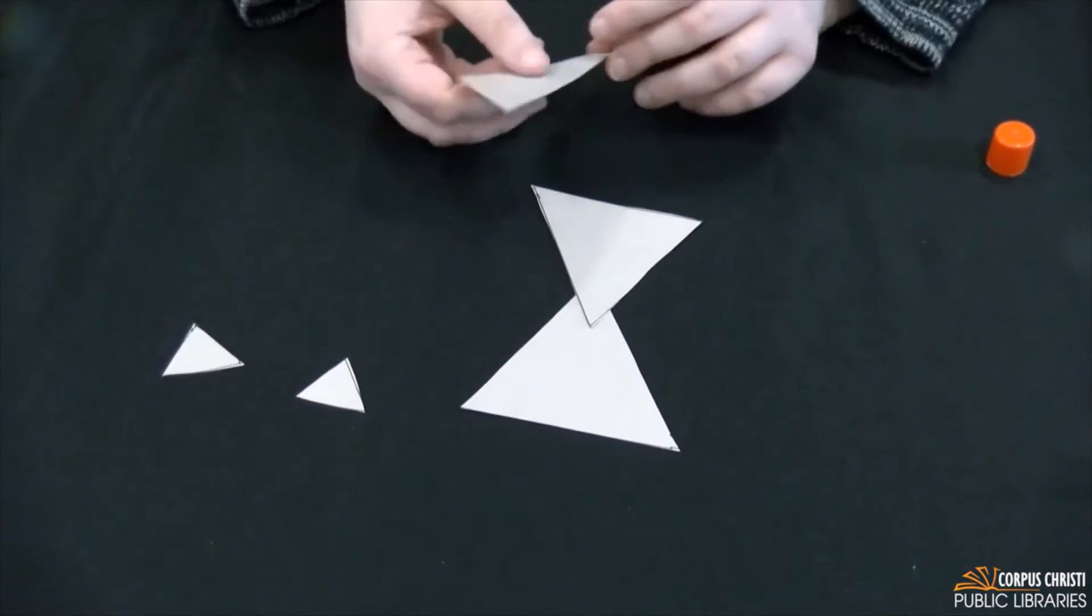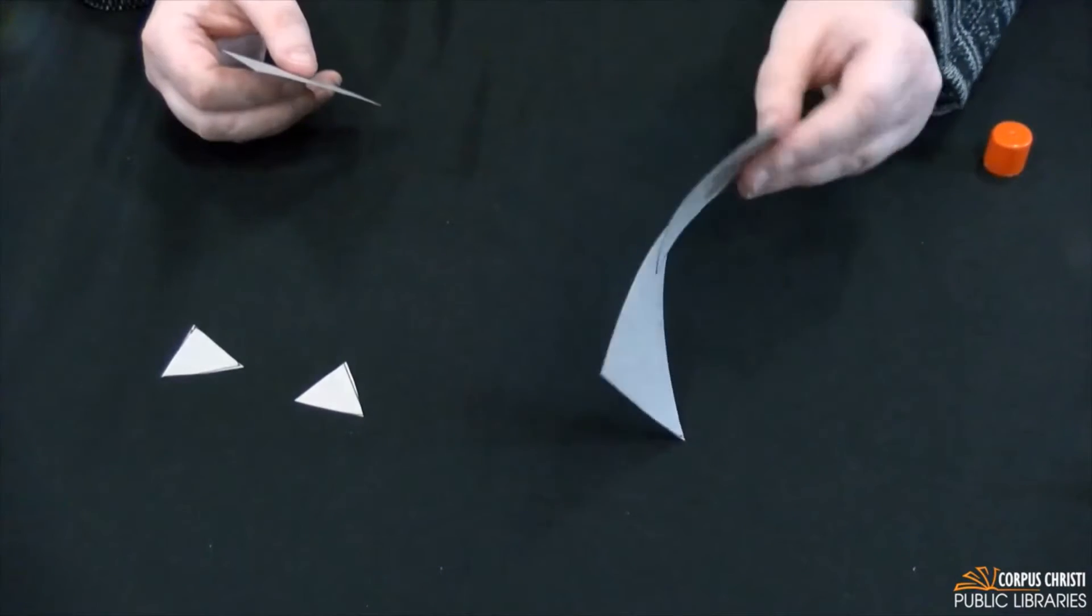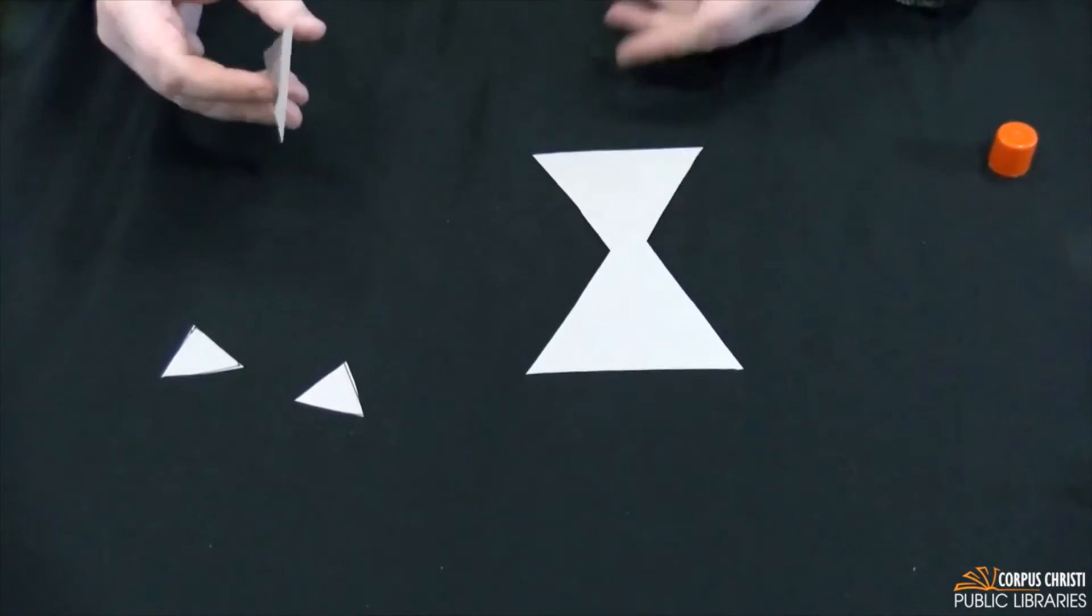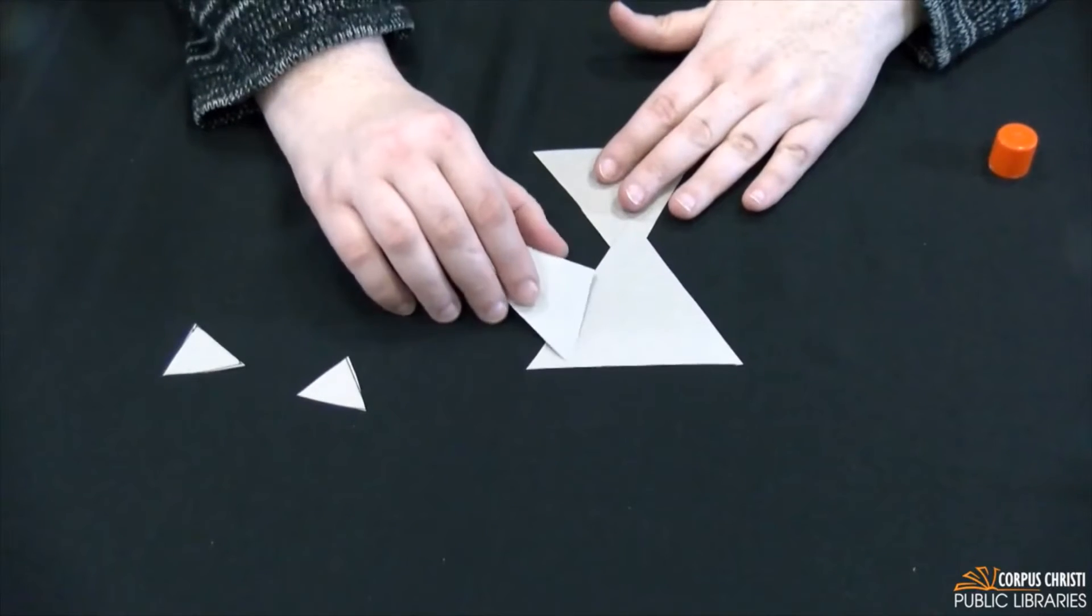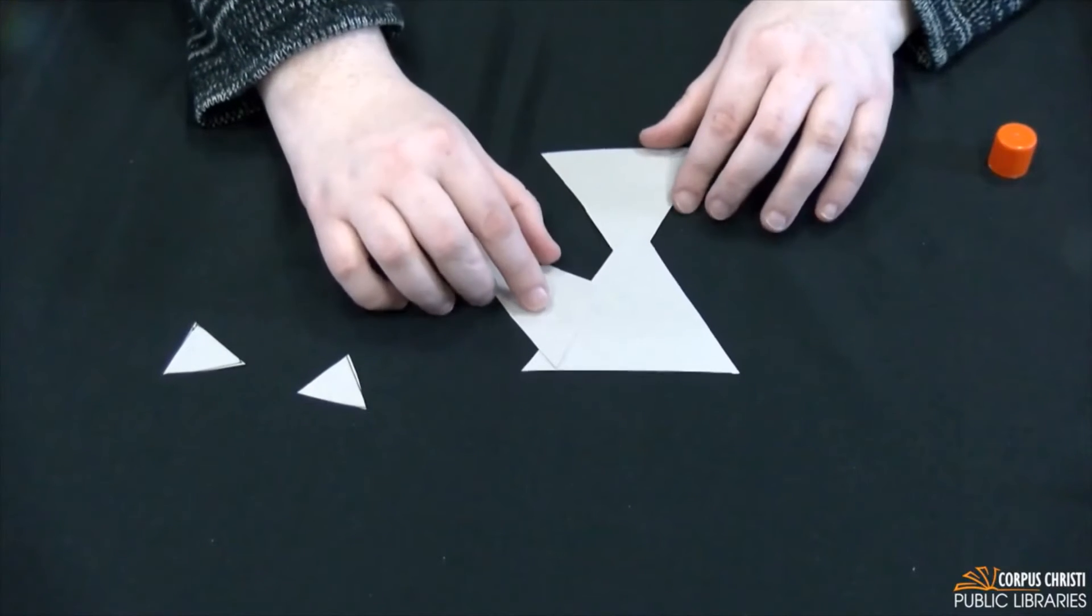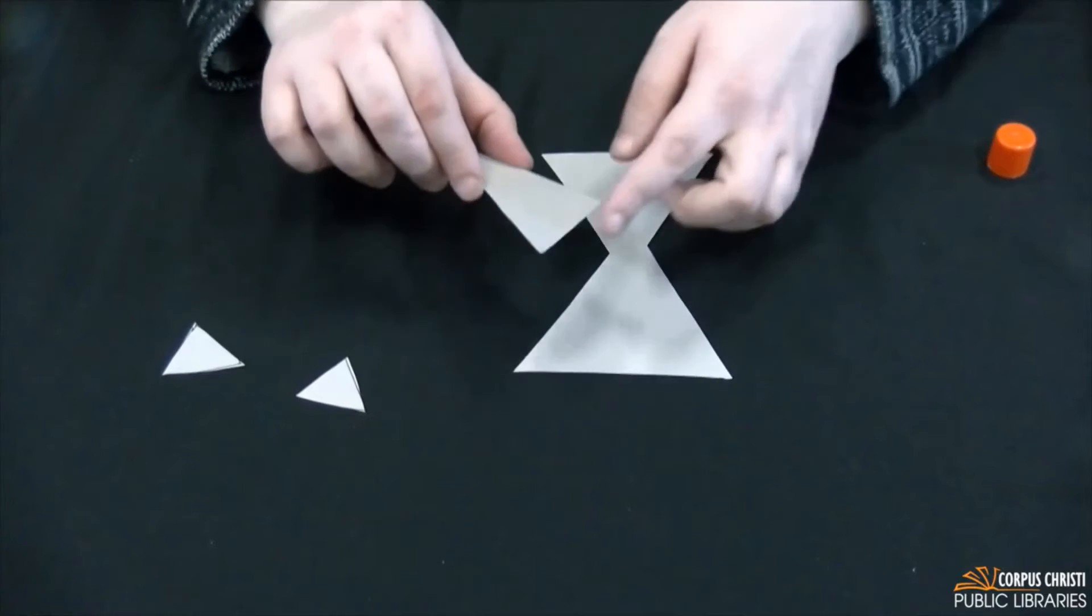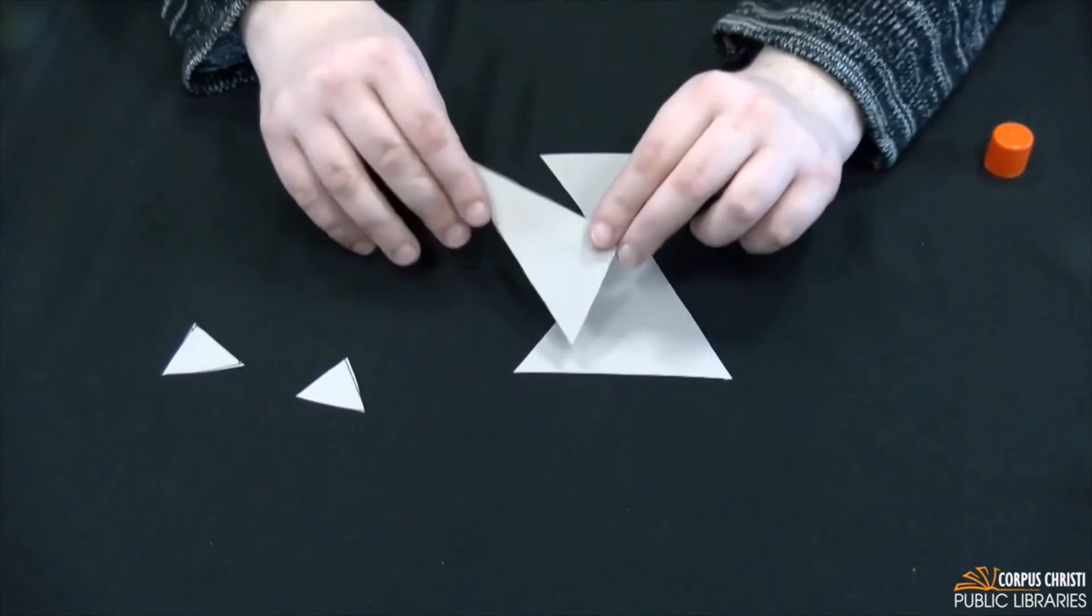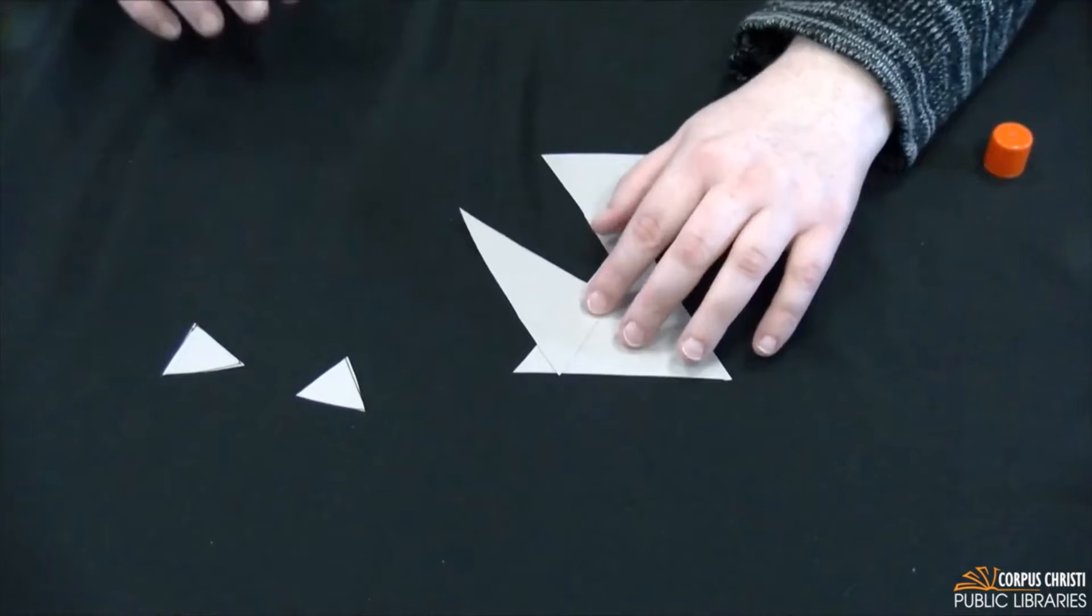I'm going to go ahead and glue on my tail so I'm actually going to flip this over and glue on my tail where the long pointed end of my triangle is going to stick out.